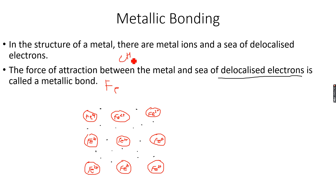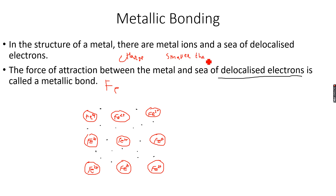The factors that affect the metallic bond are: the charge on the ion — the greater the charge, the stronger the metallic bond — and the radius of the ion — the smaller the radius, the larger the magnitude of the metallic bond. So small radius and large charge give a stronger metallic bond. That's what you need to remember.